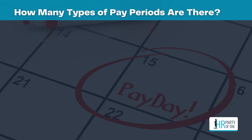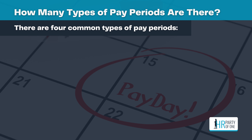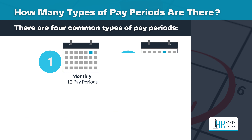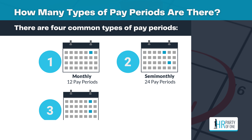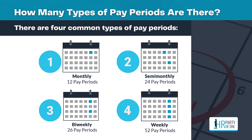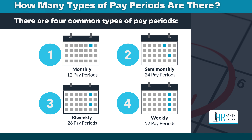How many types of pay periods are there? There are four common types of pay periods: monthly, semi-monthly, bi-weekly, and weekly. Monthly pay periods occur once per month on a specified recurring date. Semi-monthly pay periods occur twice a month on two specific recurring dates. Bi-weekly pay periods occur every two weeks on a specific day of the week, and weekly pay periods occur once a week on a specific day of the week.